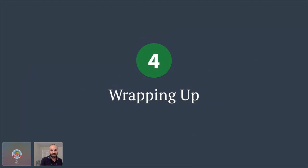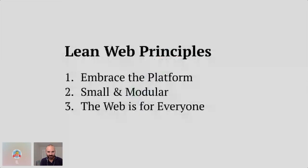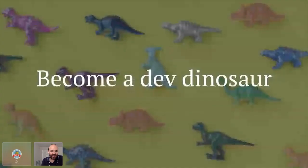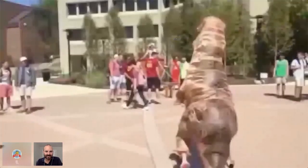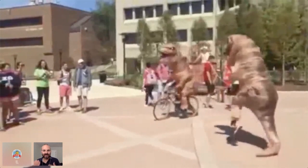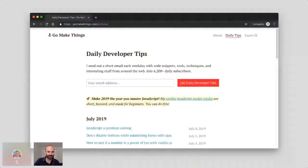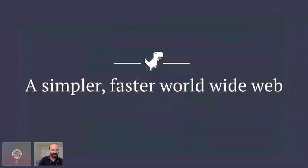To summarize: the Lean Web principles are to embrace the platform, use small and modular tools, and recognize that the web is for everyone. If you remember nothing else from this talk, think like a dev dinosaur — embrace old, stable, boring technologies and techniques over flashy new ones except where it makes sense. Let's build more bikes and fewer cars. I share Lean Web code snippets, tools, and techniques every day at gomakethings.com. Together I think we can build a simpler, faster worldwide web. Thank you all so much.